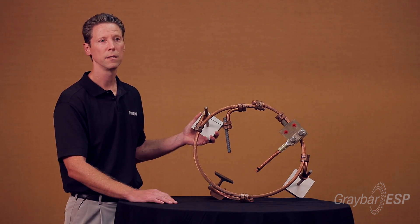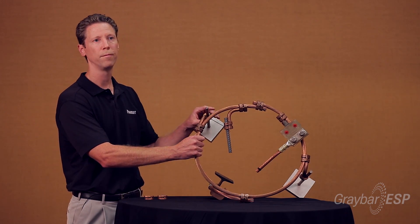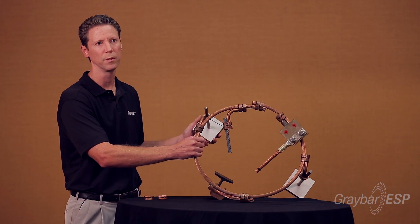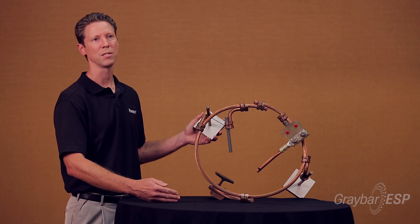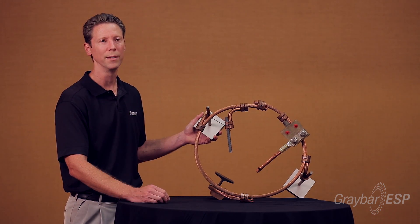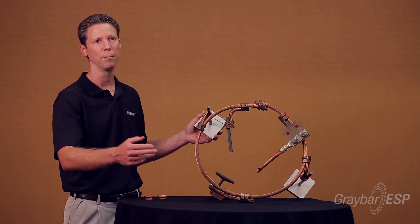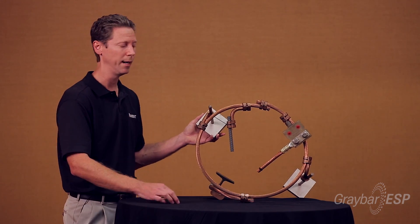And you only need three dies to crimp the entire range. So if you're dealing with a specific cable size, it's really just one die for the whole job. And then if you go up in range, you'd need another die for that.